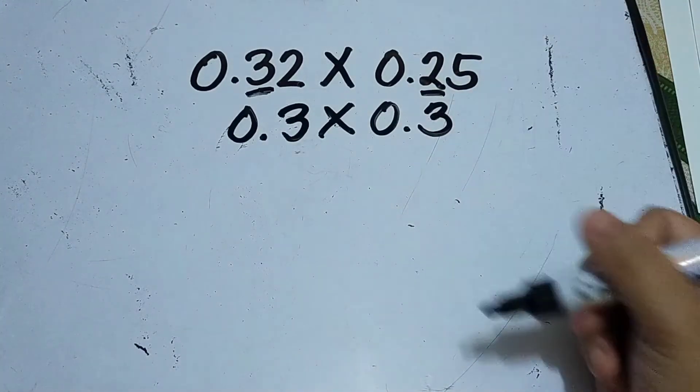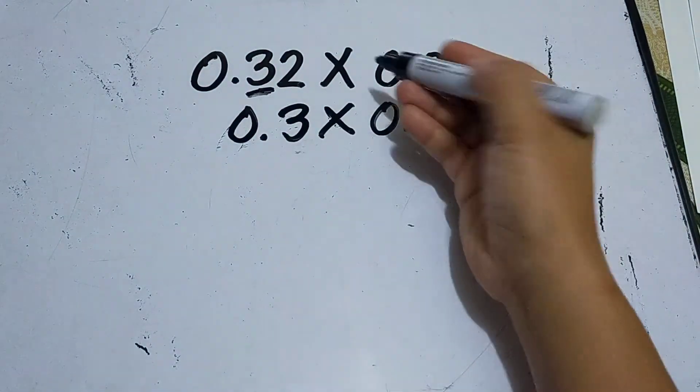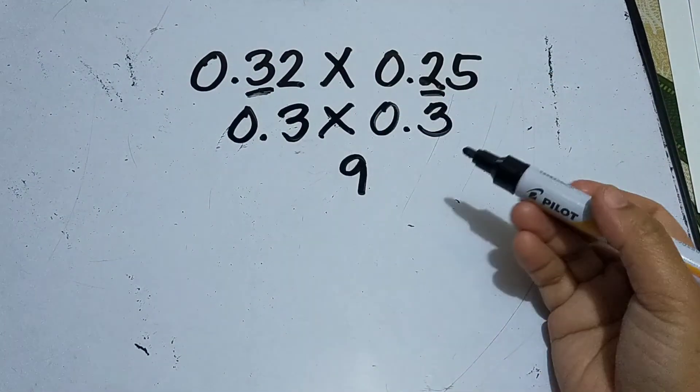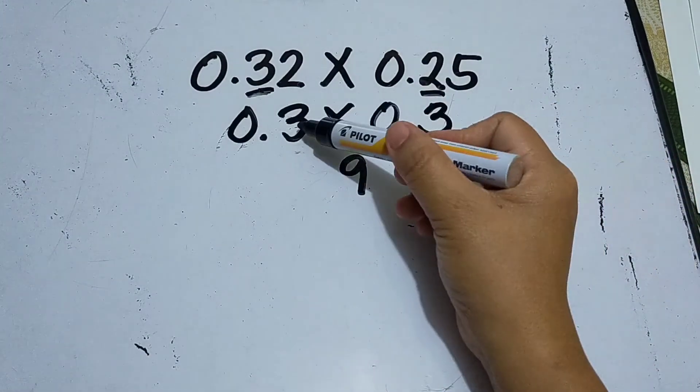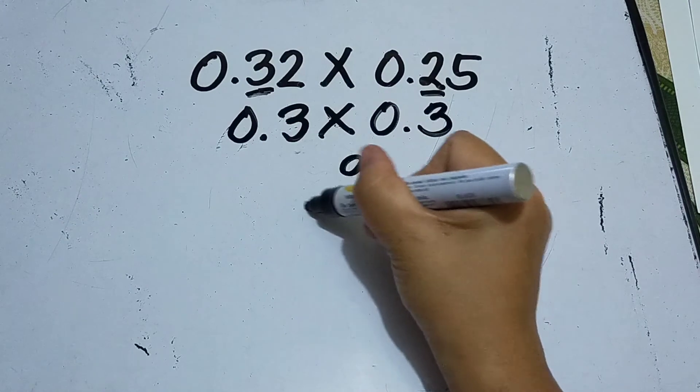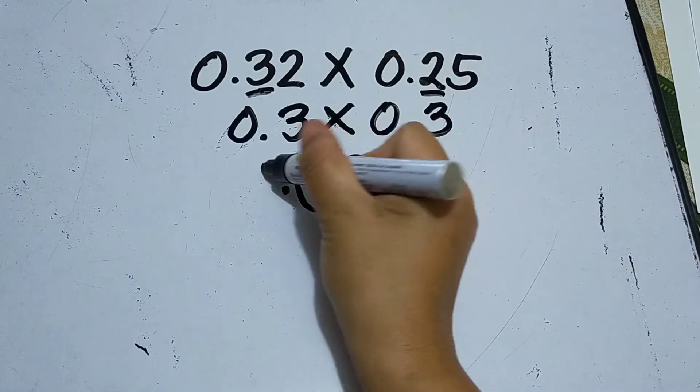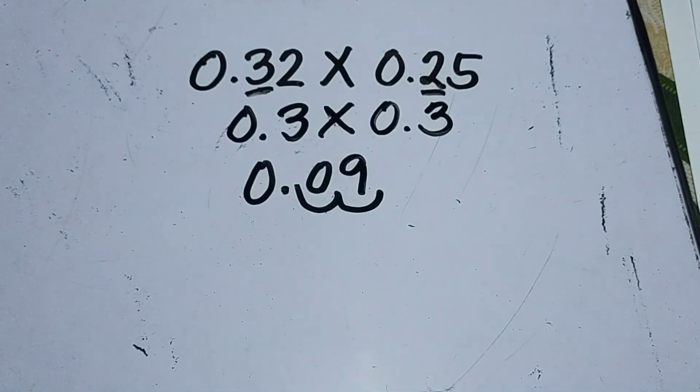Tenths. Okay, now afterwards, multiply first: three times three is nine. Then like we did earlier, we're going to count the number of digits to the right of the decimal point: one, two, one, two. Then the answer is nine hundredths. So that's all for now, thank you for watching.